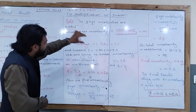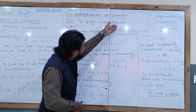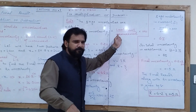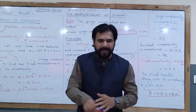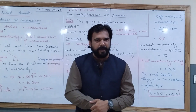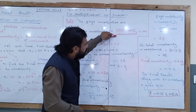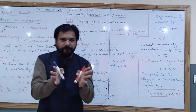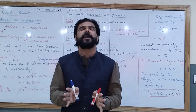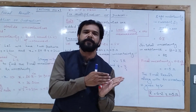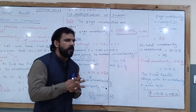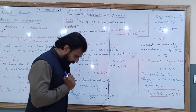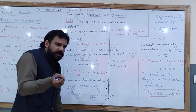Percentage uncertainty is defined as the least count divided by the measurement, multiplied by 100. When we perform this operation, we get the percentage uncertainty. For multiplication and division — for example, V = IR (voltage equals current times resistance), or R = V/I — we use percentage uncertainties.